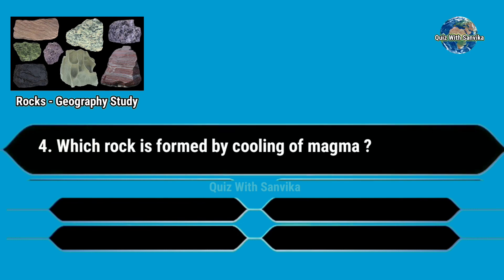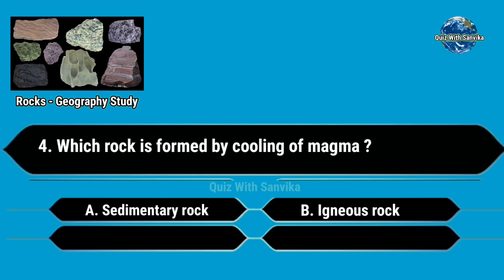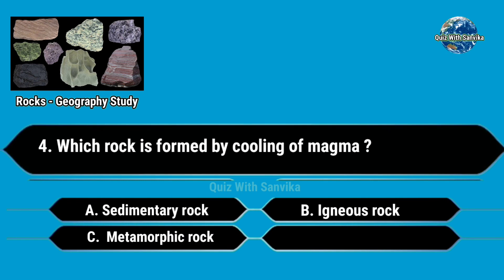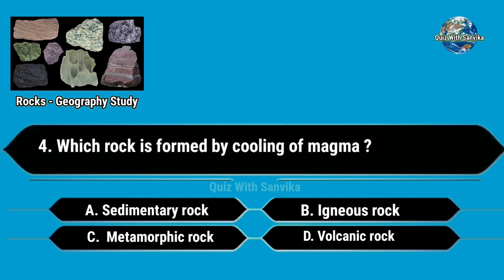Which rock is formed by cooling of magma? Options are A. Sedimentary rock, B. Igneous rock, C. Metamorphic rock, and D. Volcanic rock.